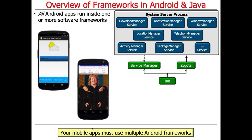All Android apps run inside one or more software frameworks — there are actually lots of them. There's a frameworks layer in Android that handles things like the activity manager, notifications, windowing events, telephony, location management, and much more. Under the hood, there's a system service manager that keeps track of all these services and makes sure they keep running even if they crash.